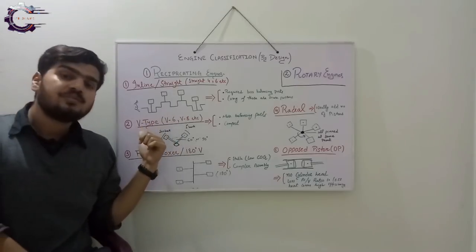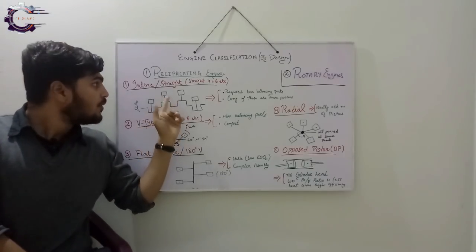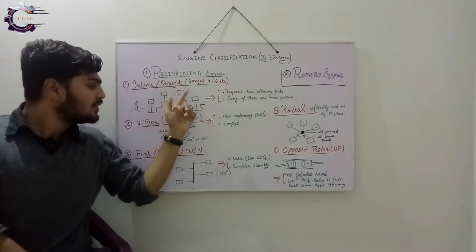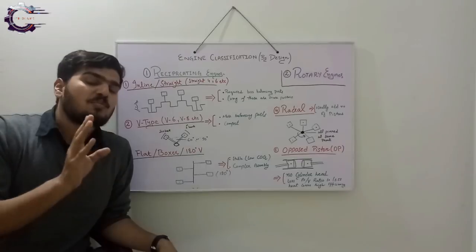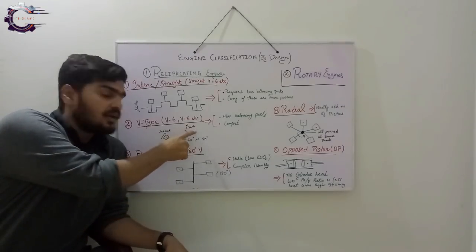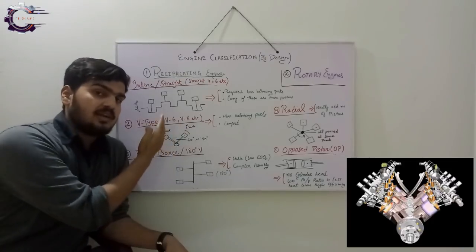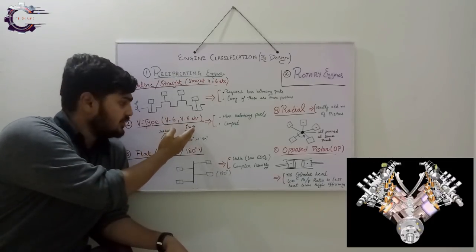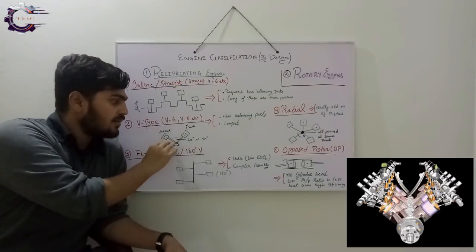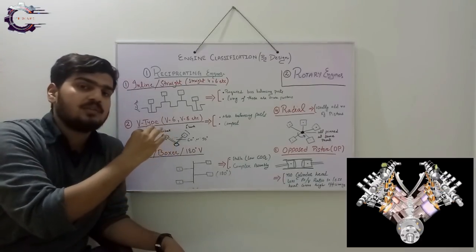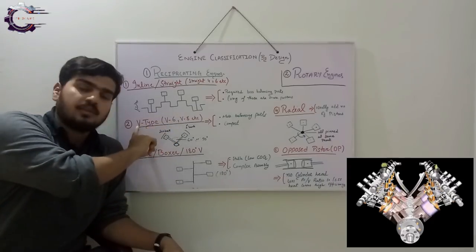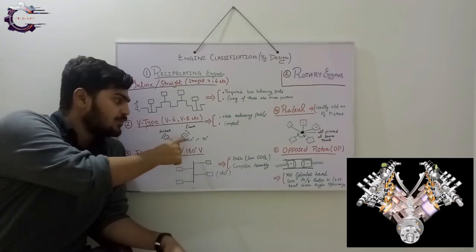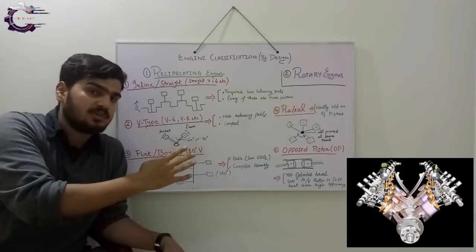And then there is a V-type engine. To resolve the length problem of the inline or straight engine, V-type engines are introduced. In V-type engines, there are different banks of pistons — a bank referring to the set of pistons in a different plane. If you see from the side of the crankshaft, you will see a V-type shape. The angles between the banks are usually 60 or 90 degrees in different V-type engines.